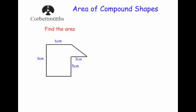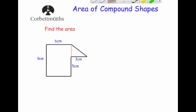Our next example has a rectangle with a triangle attached to it. We're going to split it vertically to find the area of rectangle 1 and triangle 2.